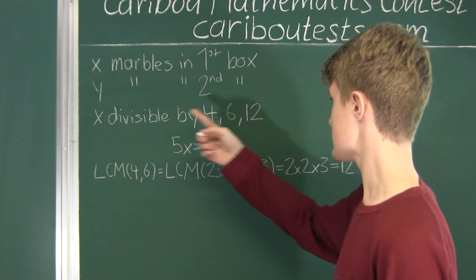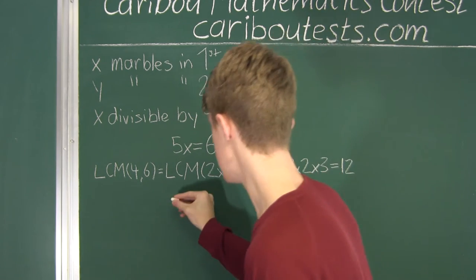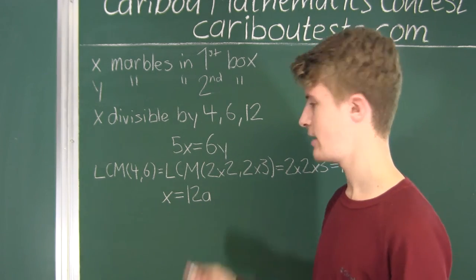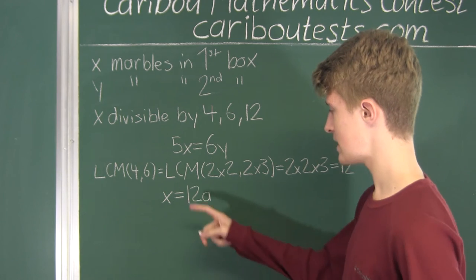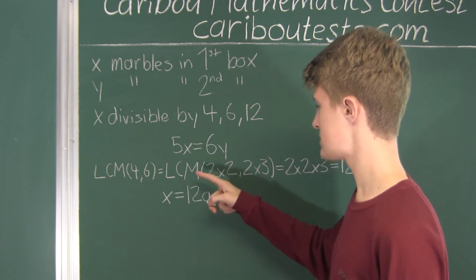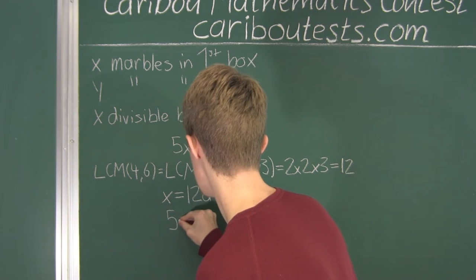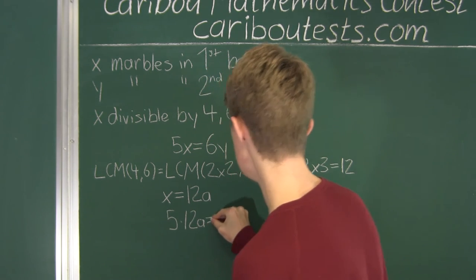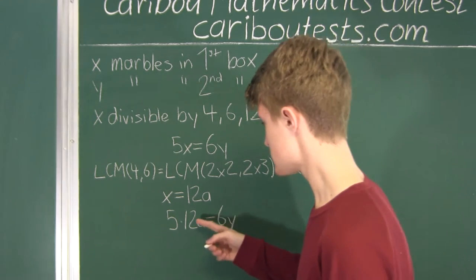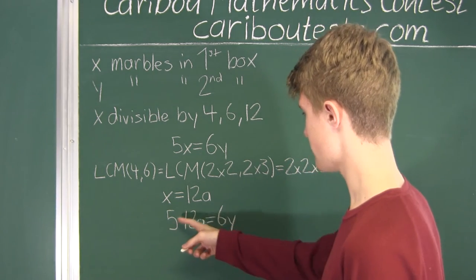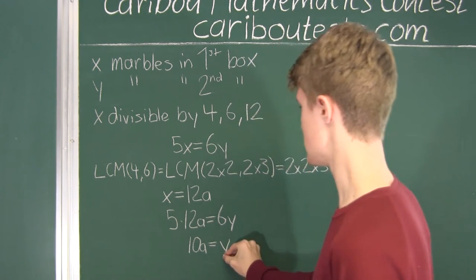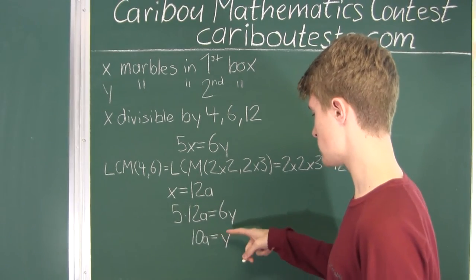Another way of writing that X is divisible by 12 is X = 12a for any positive integer a. Now substituting into 5X = 6Y, we get 5 × 12a = 6Y. Dividing both sides by 6, we get 10a = Y. So X = 12a and Y = 10a.